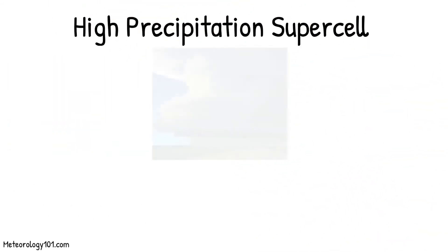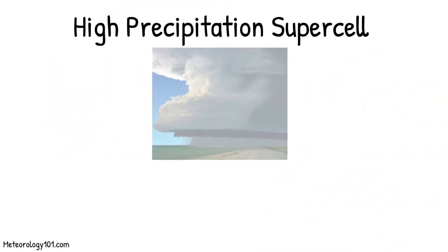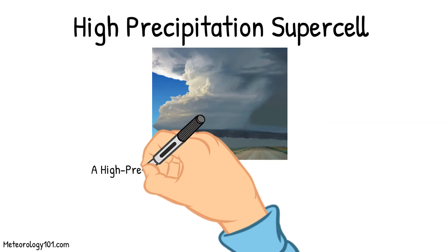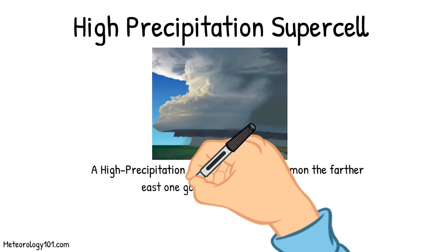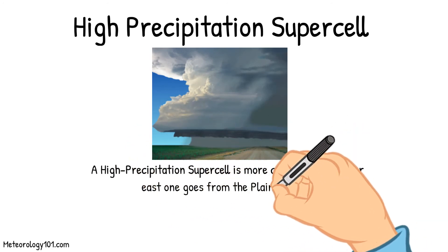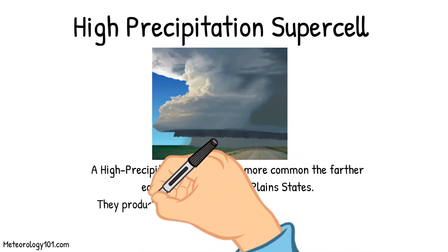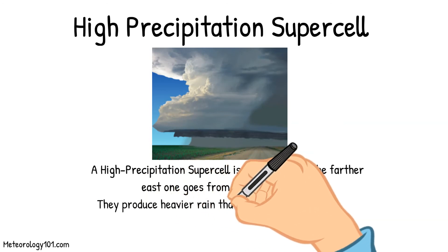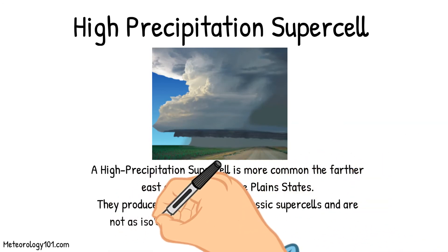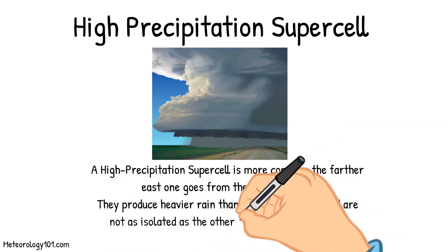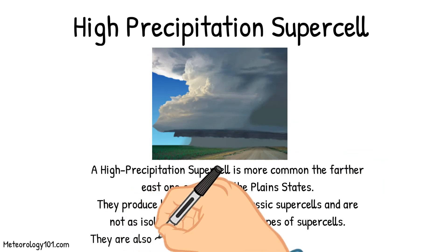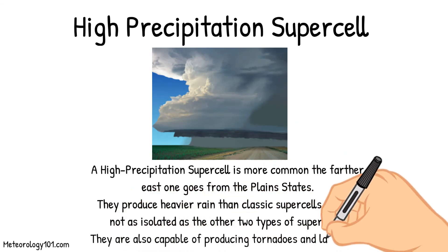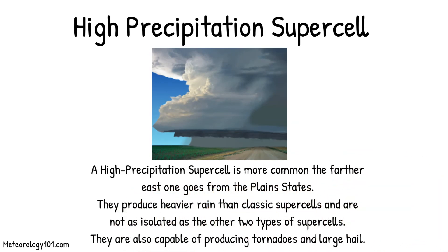High precipitation supercells are more common the farther east one goes from the plain states. They produce heavier rain than classic supercells and are not as isolated as the other two types. They are also capable of producing tornadoes and large hail.